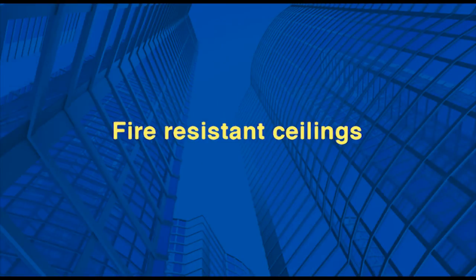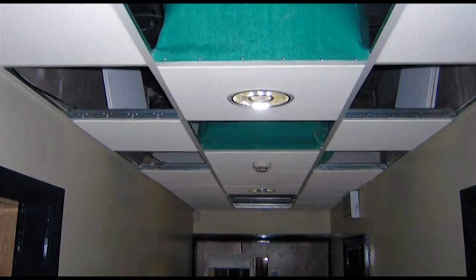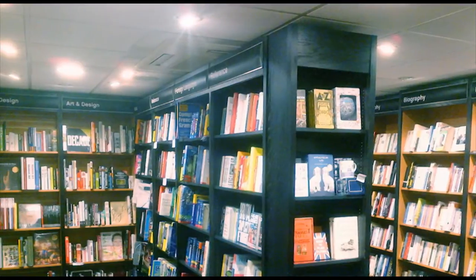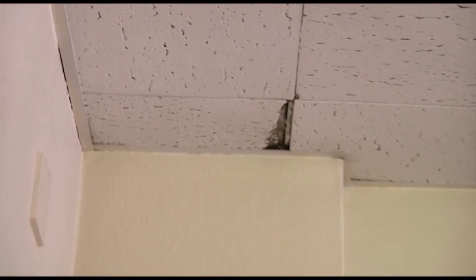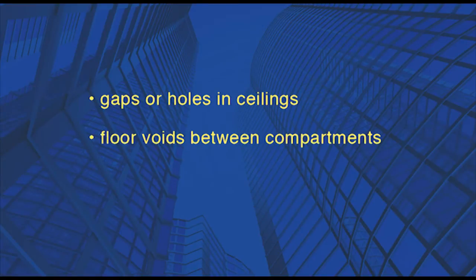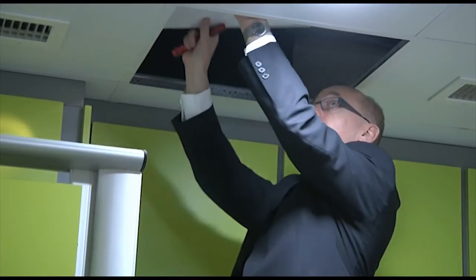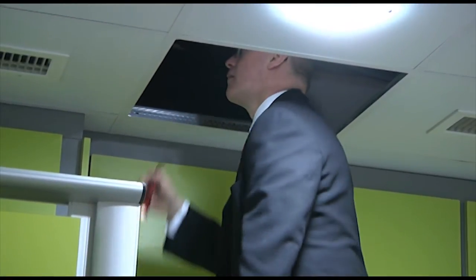Checking ceilings is important, as it is easy for ceilings to be downgraded from the original intended fire rating, for example by fitting untested down lighters. If ceiling tiles are damaged, they need to be replaced with the correct type, as replacement with tiles from another manufacturer can lead to premature failure in a fire. Other common faults include gaps or holes in ceilings, floor voids between compartments, and hold-down clips removed and not replaced following maintenance work behind the ceiling.